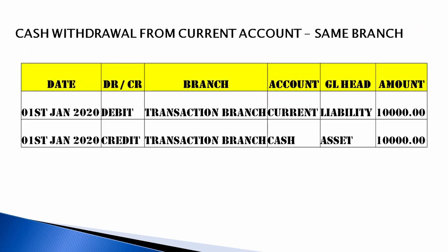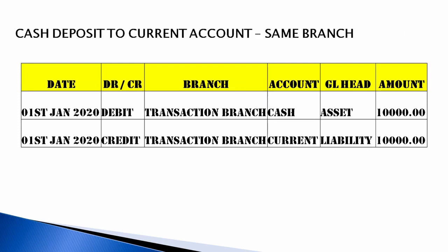For cash withdrawal from a current account at the same branch, the same logic applies: credit the asset to reduce the balance and debit the current account (liability) to reduce the customer's balance. For cash deposit to a current account, debit the asset and credit the current account, because cash is coming in — you increase the asset and increase the liability (customer's current account).